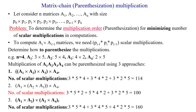Hello everyone. Here we will discuss matrix chain multiplication, also called matrix parenthesization, to reduce the number of scalar multiplications. The algorithm considers n matrices — matrix 1, matrix 2, through matrix n — each with its own dimension. The first matrix is P0 by P1, the second is P1 by P2, and the last is P(n-1) by Pn. We must determine the multiplication order by applying parentheses to minimize scalar multiplications during computation.